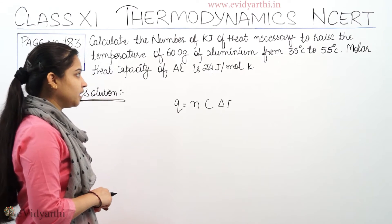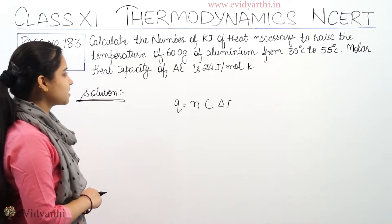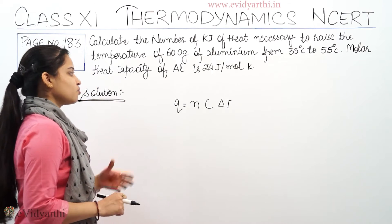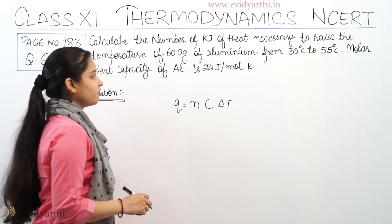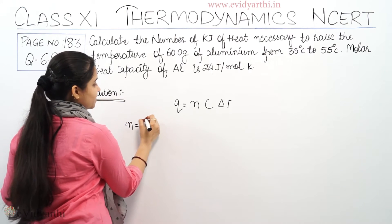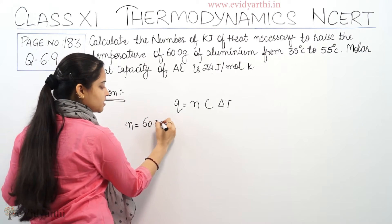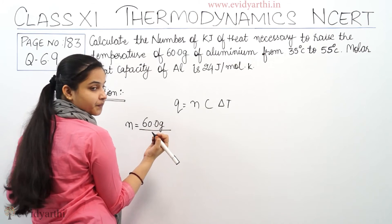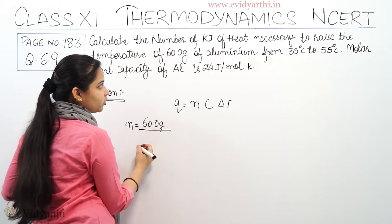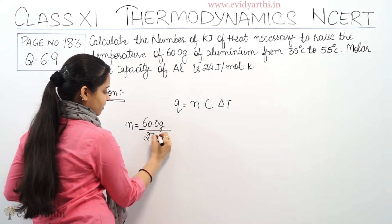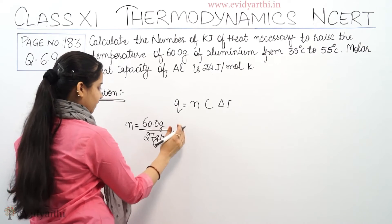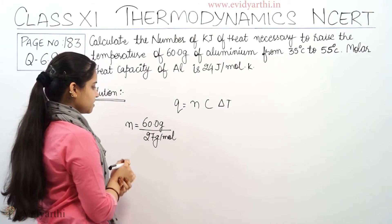The mass of aluminium given is 60 grams. It's very easy to calculate the number of moles. Number of moles N equals 60 grams divided by the molecular mass of aluminium. The molecular mass of aluminium is 27 grams per mole. So the number of moles will be calculated from this, and we will substitute this value into our equation.